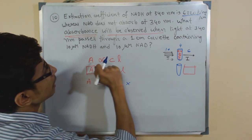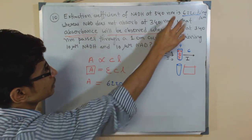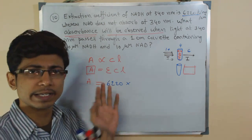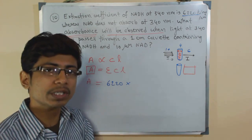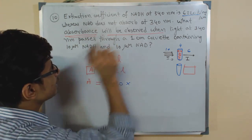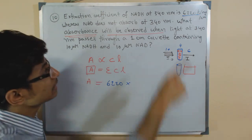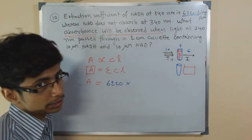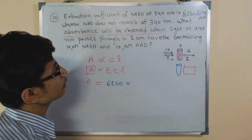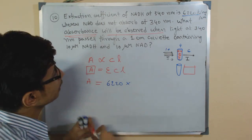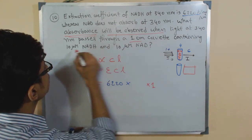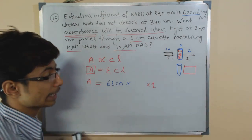An important point: the extinction coefficient is given at 340 nanometers, because different molecules absorb at different wavelengths — proteins absorb at 280 nm, DNA and nucleotides absorb at 260 nm, and NADH absorbs at 340 nm. NAD does not absorb at 340 nm. The cuvette length is 1 centimeter, and the concentration of NADH provided is 10 micromolar.